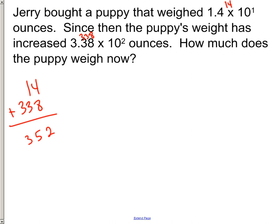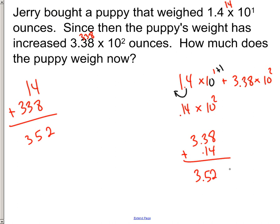Well, all you have to do is add these two numbers that are in scientific notation. Since this is the smaller exponent, add 1 to it, drag this back, and that makes it 0.14 times 10 to the second. Now we can stack up our front numbers and we'd get 3.52 times 10 to the second, which is the exact same thing, 352 ounces.